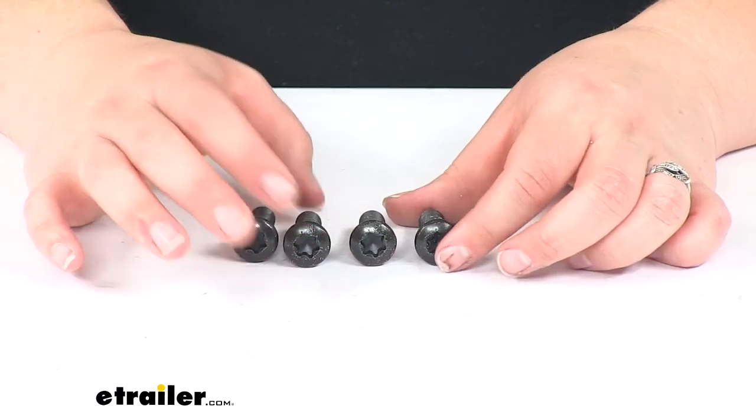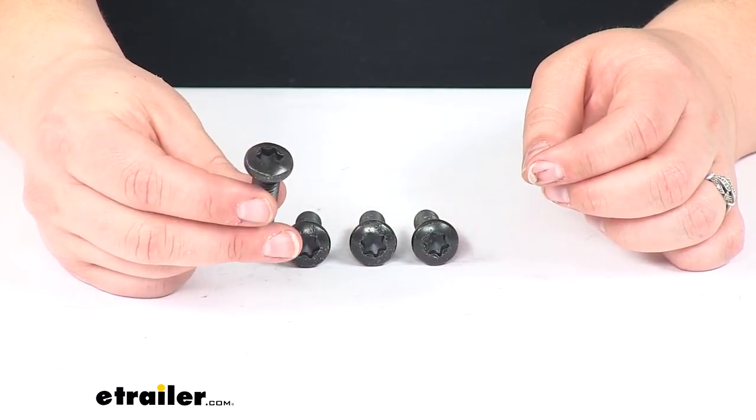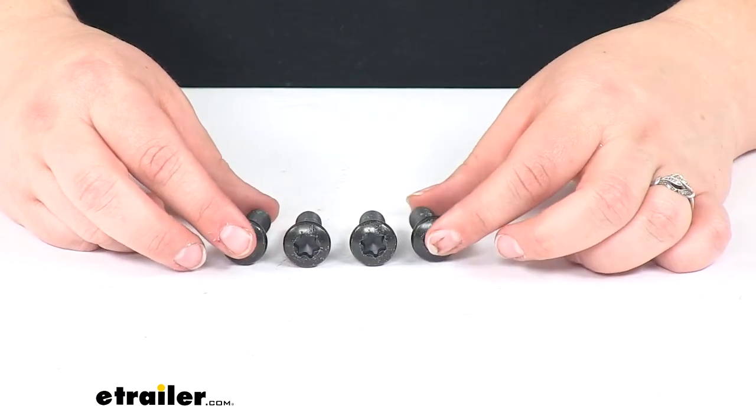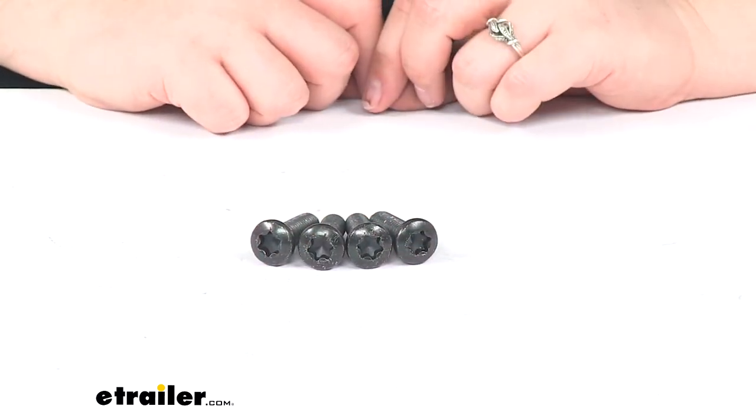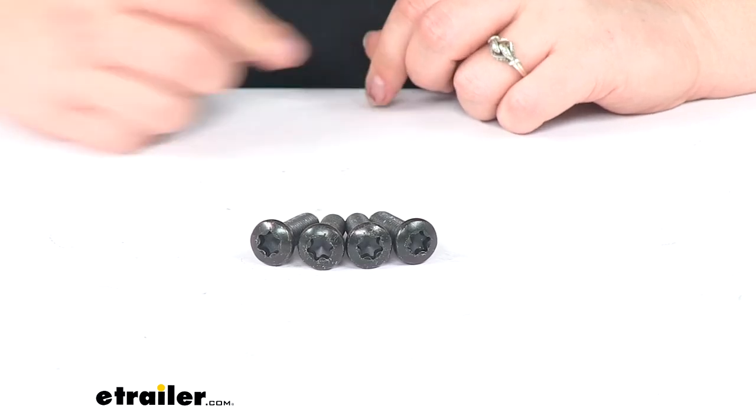They're zinc plated Torx button style bolts, and they'll help you get that Fairlead plate mounted up. That's going to do it for our look at the 3 1/8 inch Torx bolts for Bulldog Winch Jeep JL Winch Mount Fairlead plate.